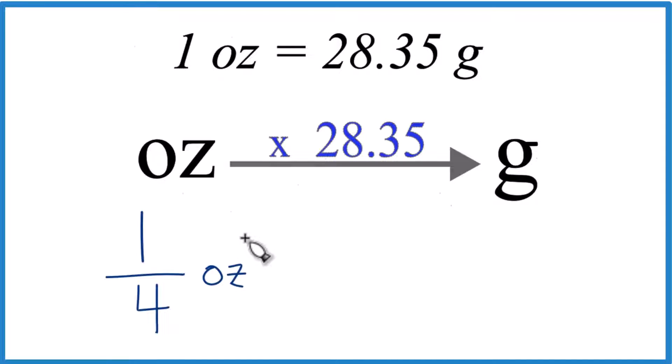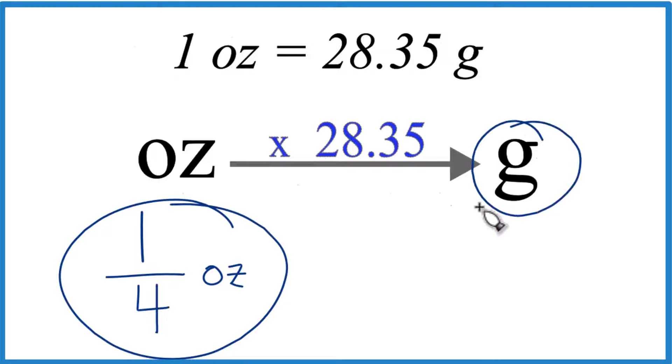So let's say, for some reason, you want to convert one-fourth of an ounce to grams. How do you do that?